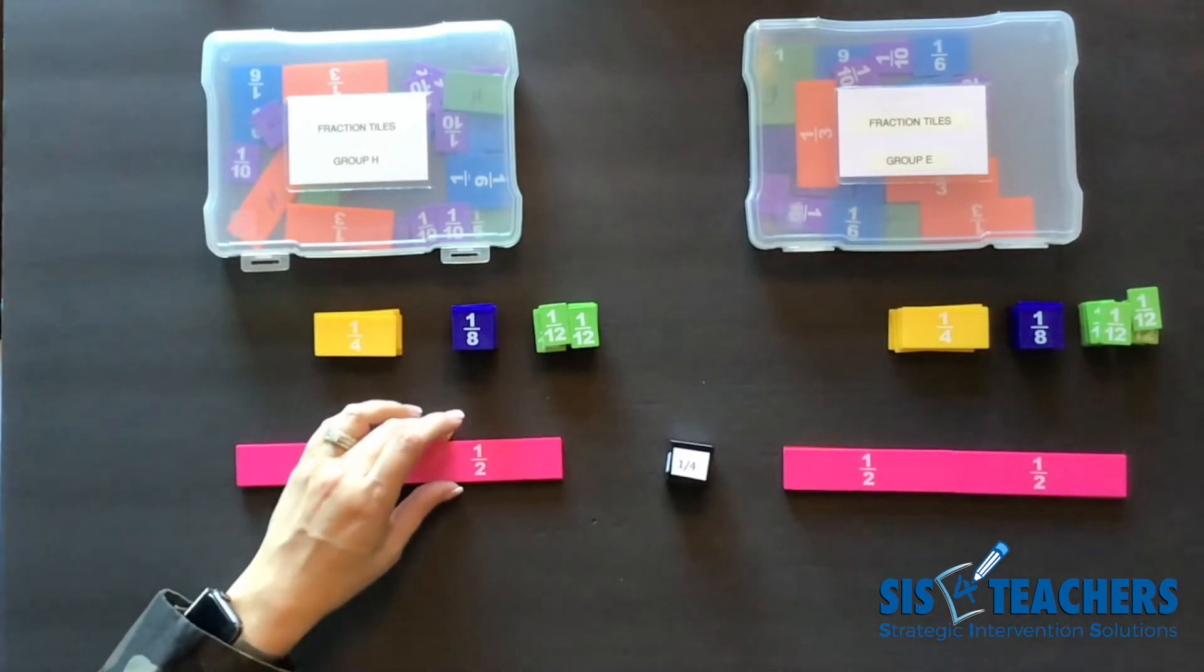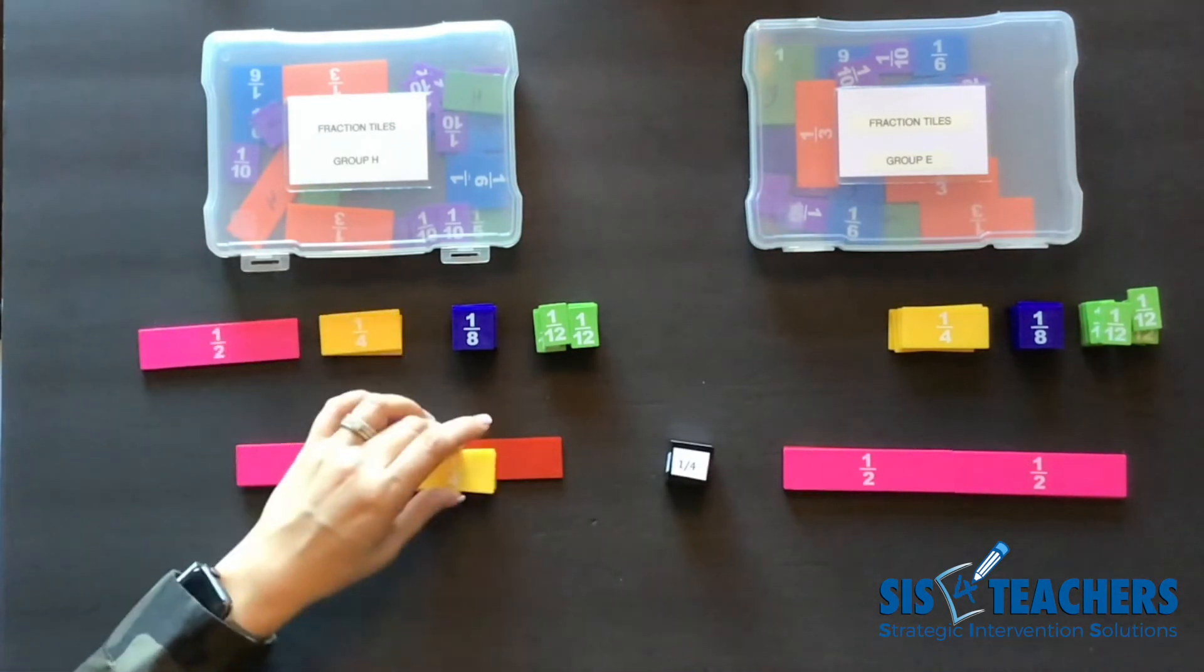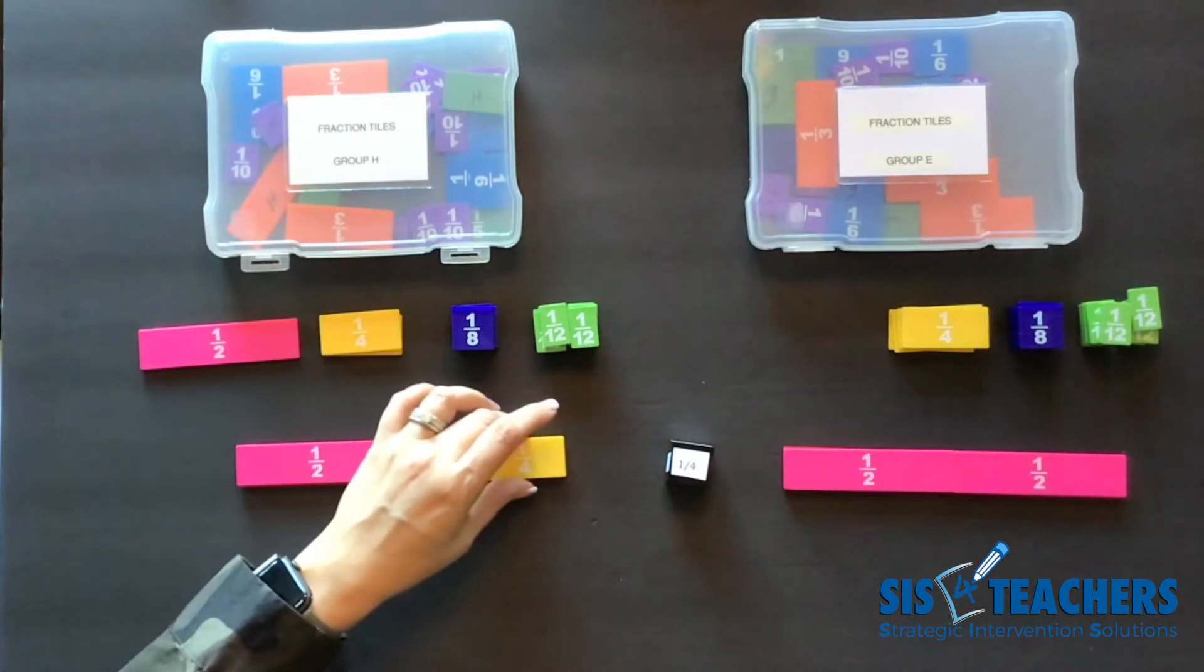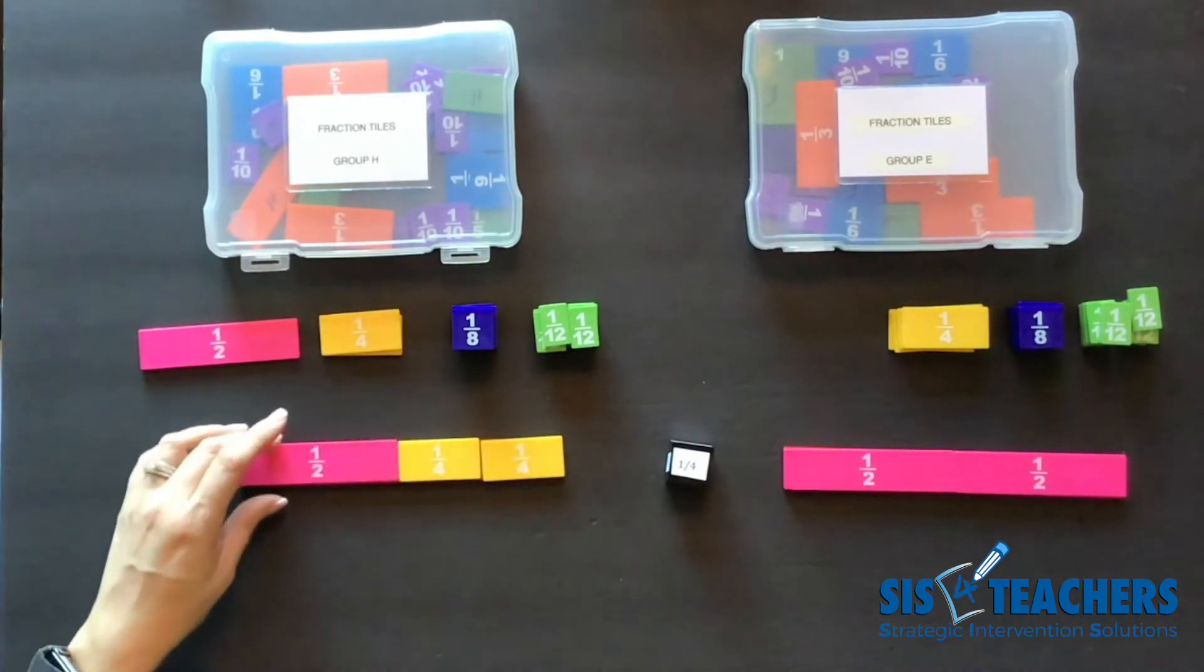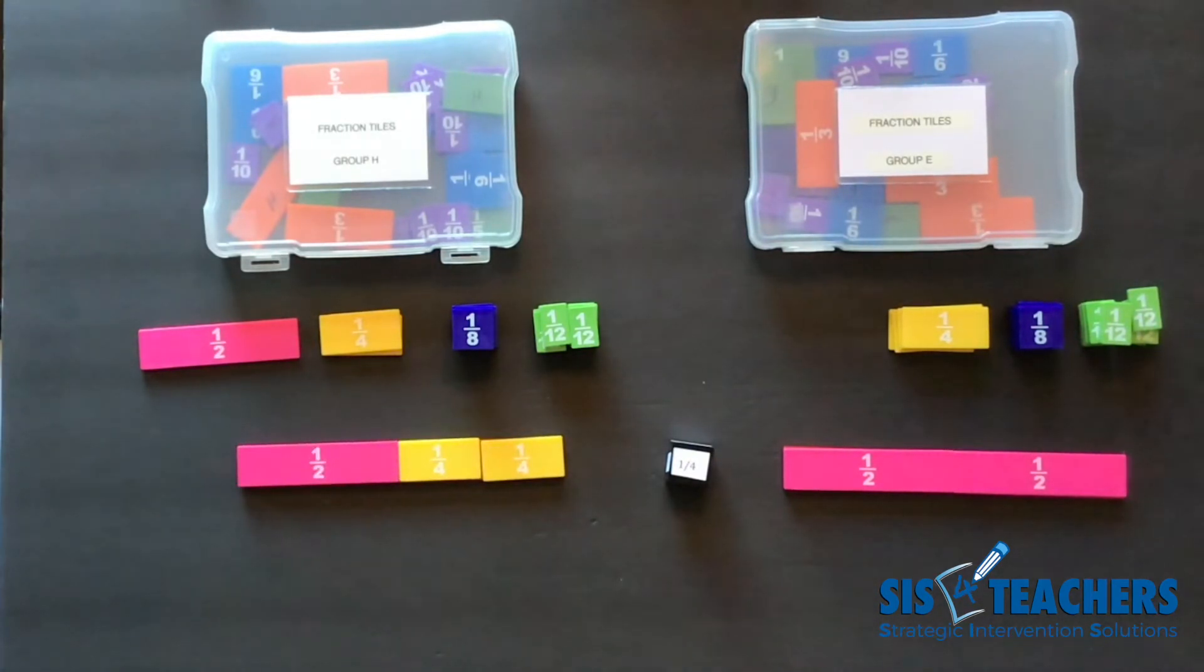I went ahead and rolled a fourth. I'm going to decide to exchange mine for two fourths which is equal to one half. In this case that's my turn. I cannot take one fourth off. It's my partner's turn.